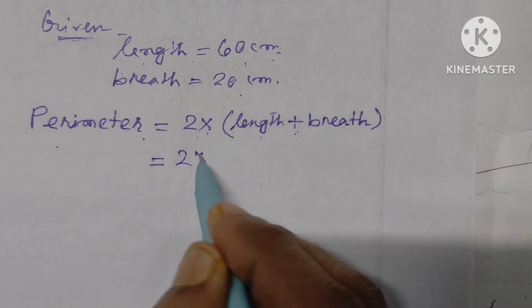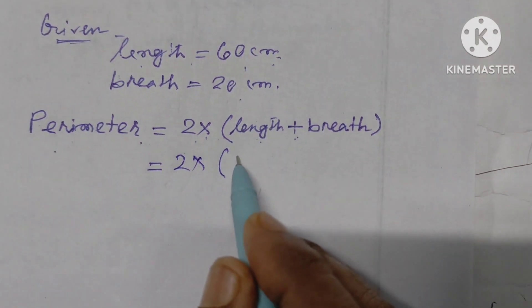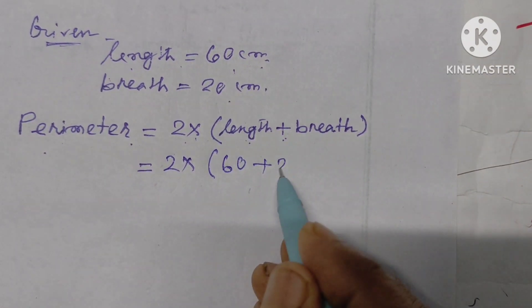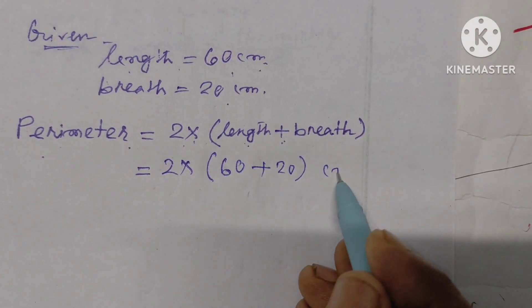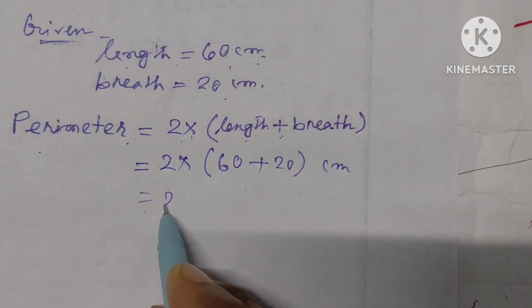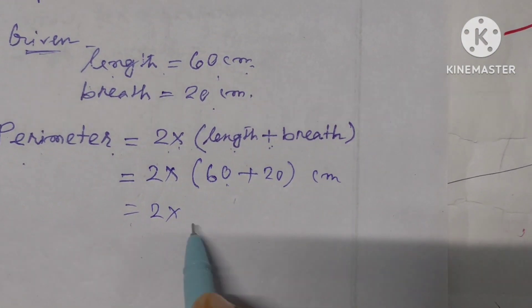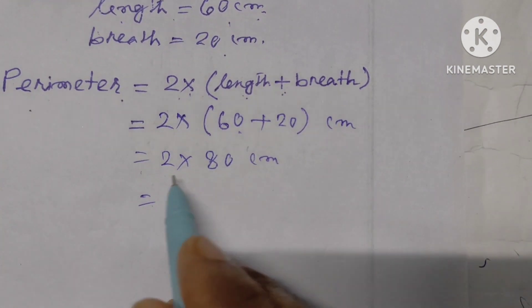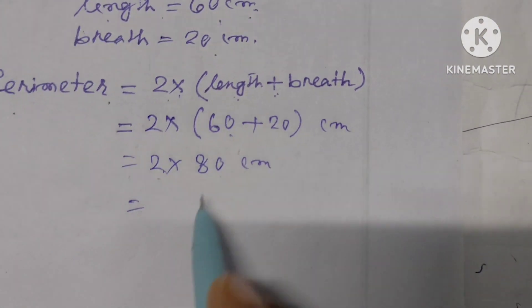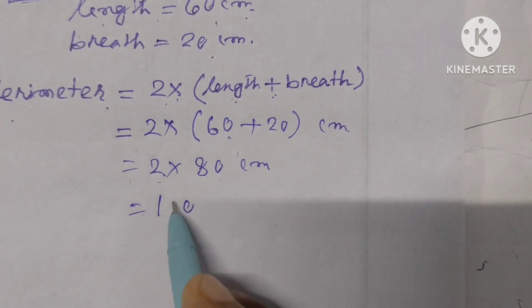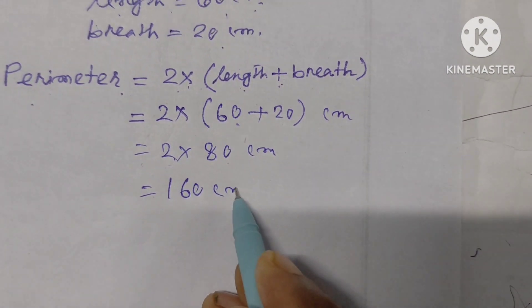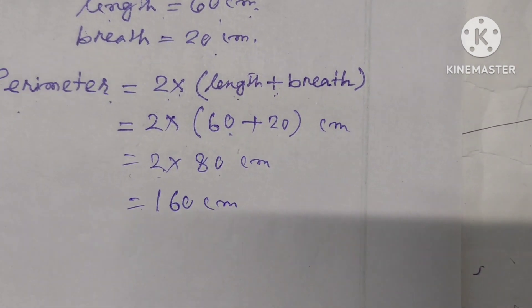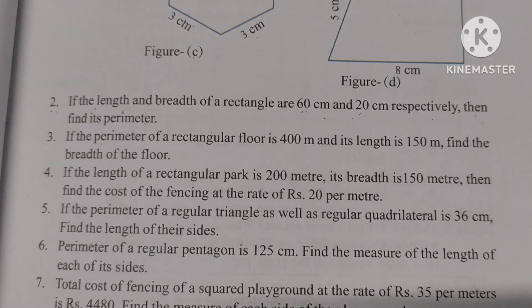Length is 60 cm, breadth is 20 cm. So: 2 times (60 plus 20) equals 2 times 80, which equals 160. Therefore, the perimeter of the rectangle is 160 cm.